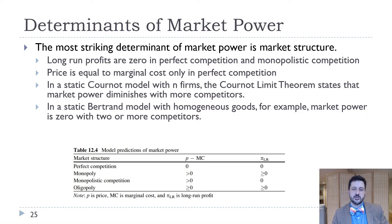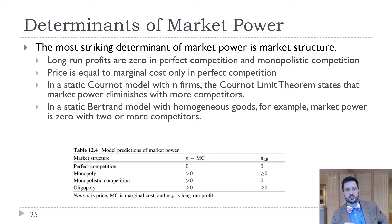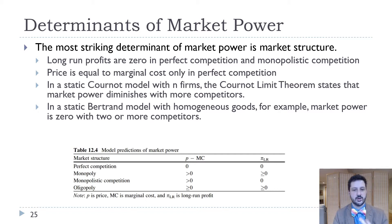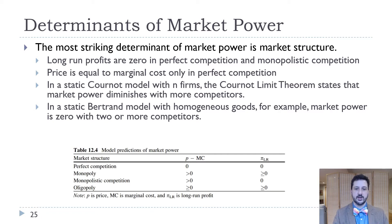We want to think about some of the determinants of market power in this last video for Chapter 12. One of the most important determinants is market structure. In perfect competition, long-run profits are zero and price equals marginal cost. Whereas on the other end of the spectrum, with monopoly, price is going to be larger than marginal cost and they will have long-run profits.